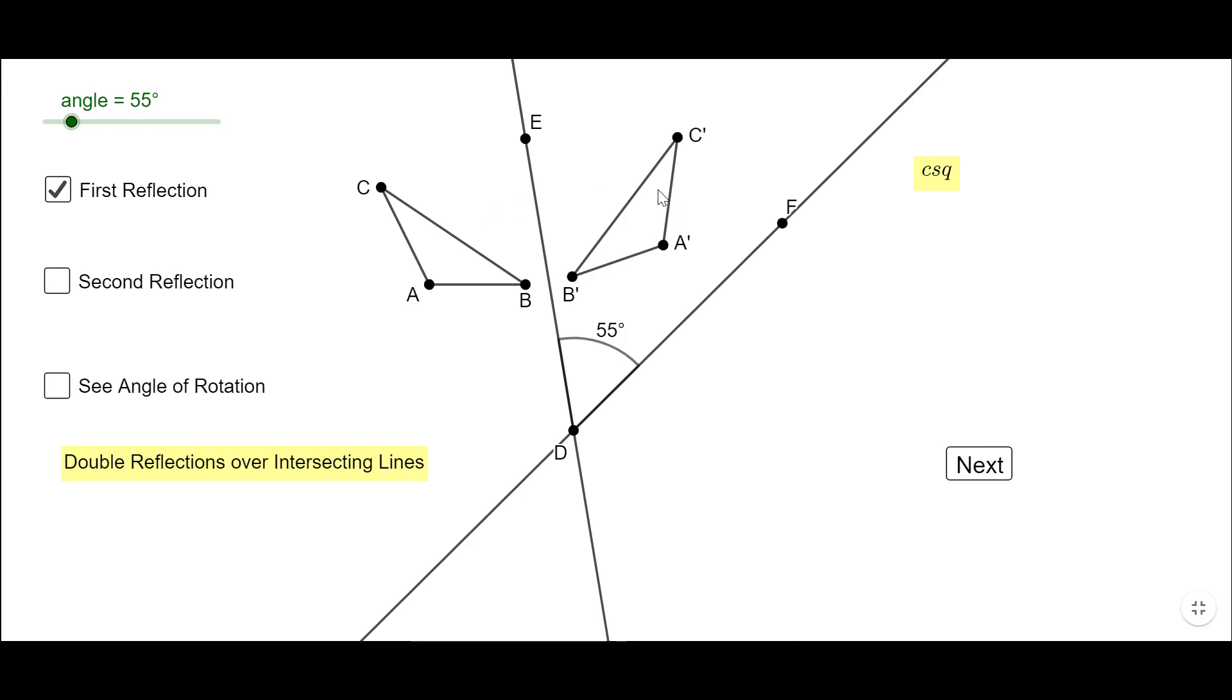My next thing will be to reflect this triangle over the line DF. Look at here what we get: A second, B second, C second. My question now to you is, do you see that unique transformation—translation, rotation, or reflection—that allows us to move the triangle ABC on top of the triangle A second, B second, C second?